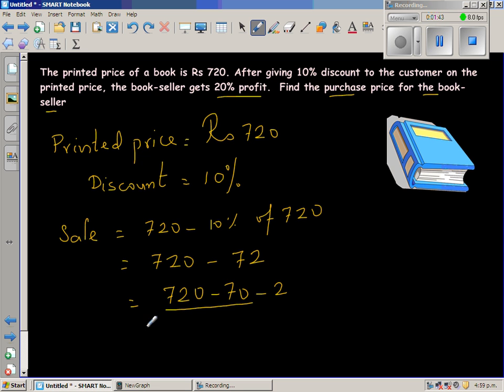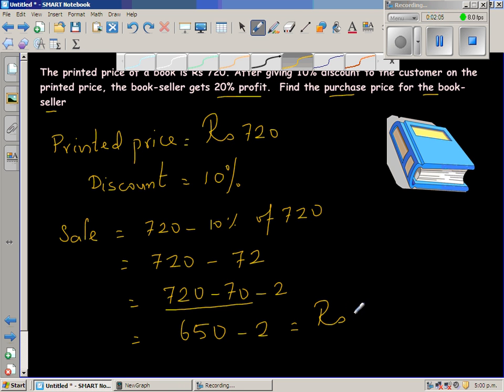So 720 take away 70. I'll take away first 20, which is 700, and then 50. So this is 650 take away 2. So the sale price is 648 rupees. The sale price is 648, whichever way you do it.